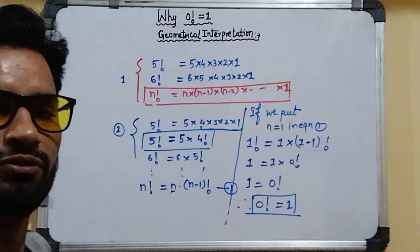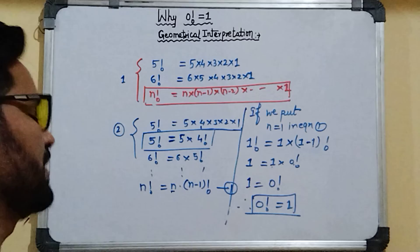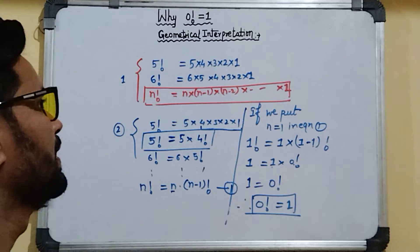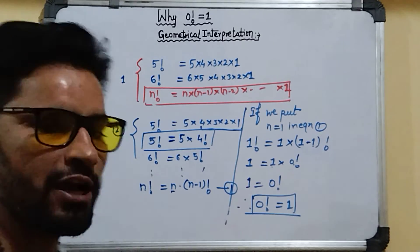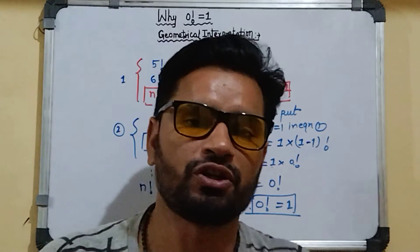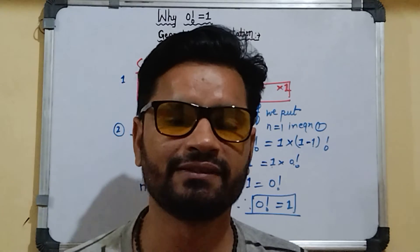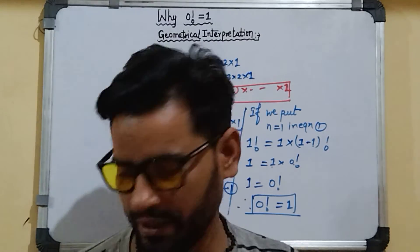This is the proof that factorial 0 is equal to 1. This is the fundamental and basic interpretation of factorial 0 using factorial notation.